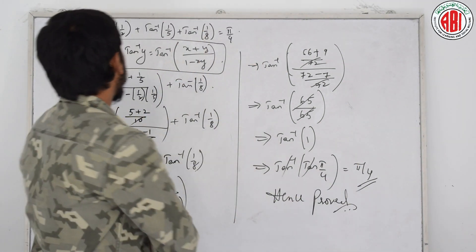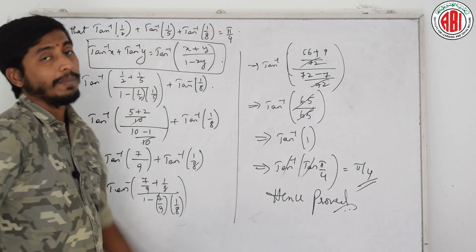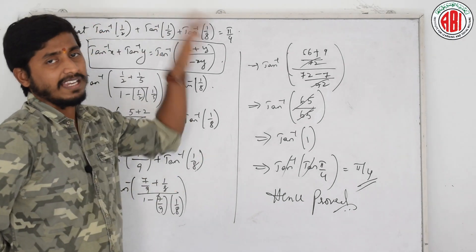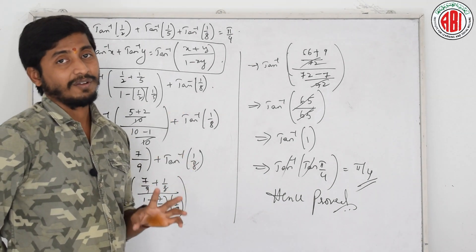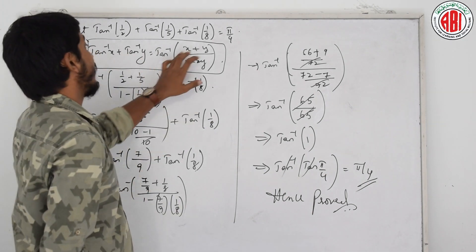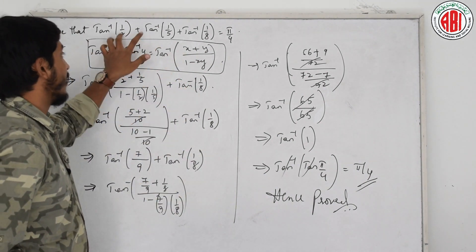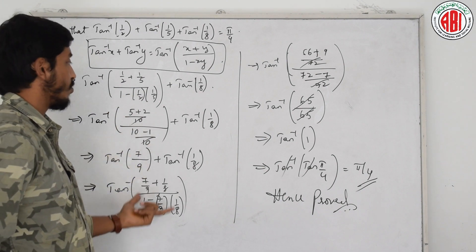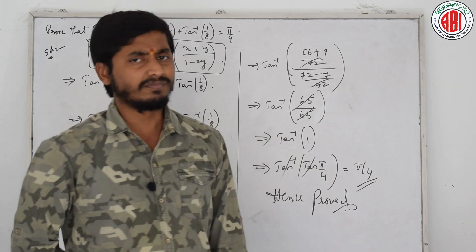Let us recap. The question is tan inverse 1 by 2 plus tan inverse 1 by 5 plus tan inverse 1 by 8 equals pi by 4. We do not need the formula for three terms at once. It is better to remember tan inverse x plus tan inverse y equals tan inverse x plus y by 1 minus xy, apply it to the first two terms, then apply it again to the result and the third term, obtaining tan inverse 1, which is pi by 4.